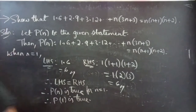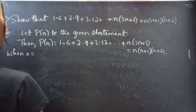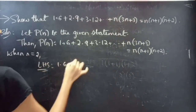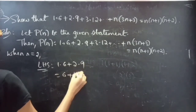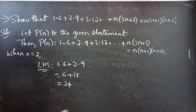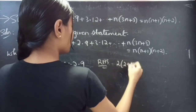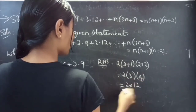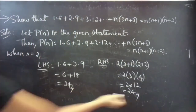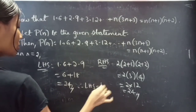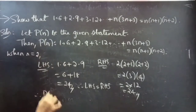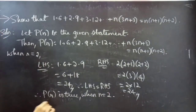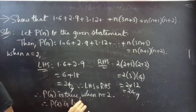Likewise, when n equals to 2, we take the first two terms from LHS: 1 into 6 plus 2 into 9 equals 6 plus 18, which is 24. Coming to RHS, substituting n equals to 2: 2 into 2 plus 1 into 2 plus 2 equals 2 into 3 into 4, which is 24. So LHS equals to RHS, and P(2) is true.